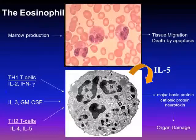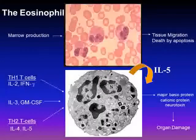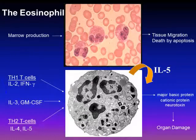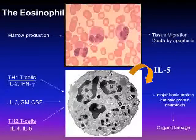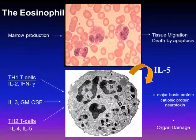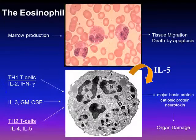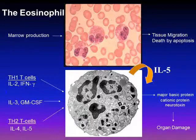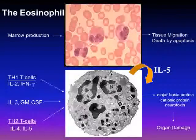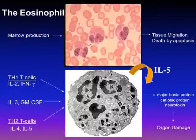By way of introduction to eosinophilic disorders, I'd like to discuss some background on the eosinophil. Of historical interest, the eosinophil was histopathologically characterized in 1879 by Dr. Paul Ehrlich, who mastered the use of aniline dyes to distinguish cell types. The term eosinophil was born from the observation that the acidic dye eosin reacted strongly with the abundance of highly basic proteins found within the granules of these cells. Eosinophils serve a central function in host defense against helminth or parasitic infections and undergo recruitment and activation in allergic and inflammatory responses.